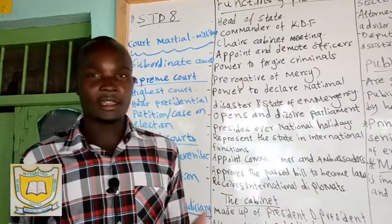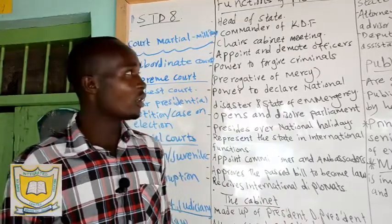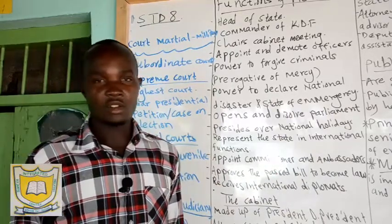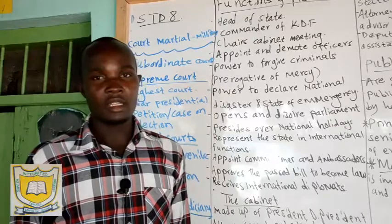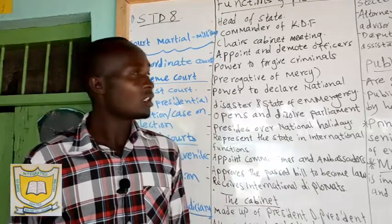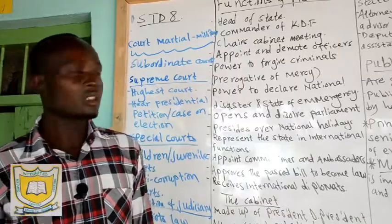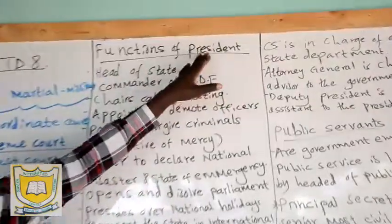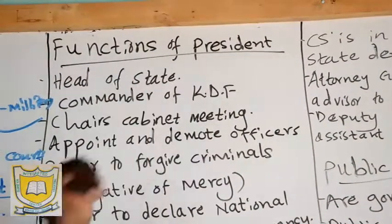We also looked at the executive. We looked at the members consisting of the executive: the president, the attorney general, the deputy president, then we have the cabinet secretaries — those are the CS — and the secretaries to the cabinet and the other members. We also looked at the role of the president under the cabinet, the function of the president.